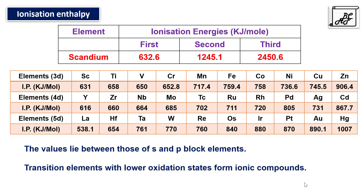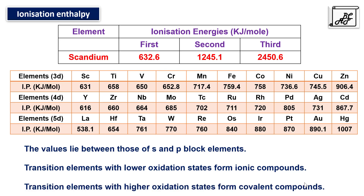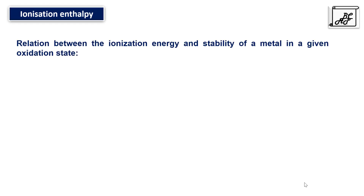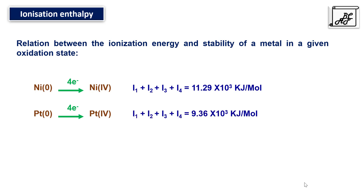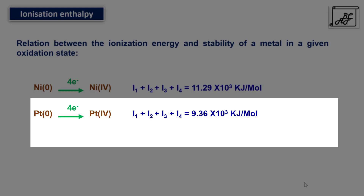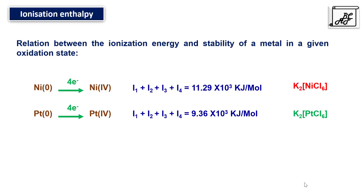Transition elements with lower oxidation states form ionic compounds, whereas those with higher oxidation states form covalent compounds. Regarding the relation between ionization energy and stability in a given oxidation state: when converting nickel to Ni⁴⁺, the sum of the four ionization enthalpies is 11.29 × 10³ kJ/mol. For platinum to Pt⁴⁺, the total ionization enthalpy is 9.36 × 10³ kJ/mol. Since platinum has a lower ionization enthalpy in the +4 oxidation state, compounds of platinum are more stable in +4 — for example, K₂PtCl₆ exists, whereas a comparable Ni⁴⁺ compound does not.